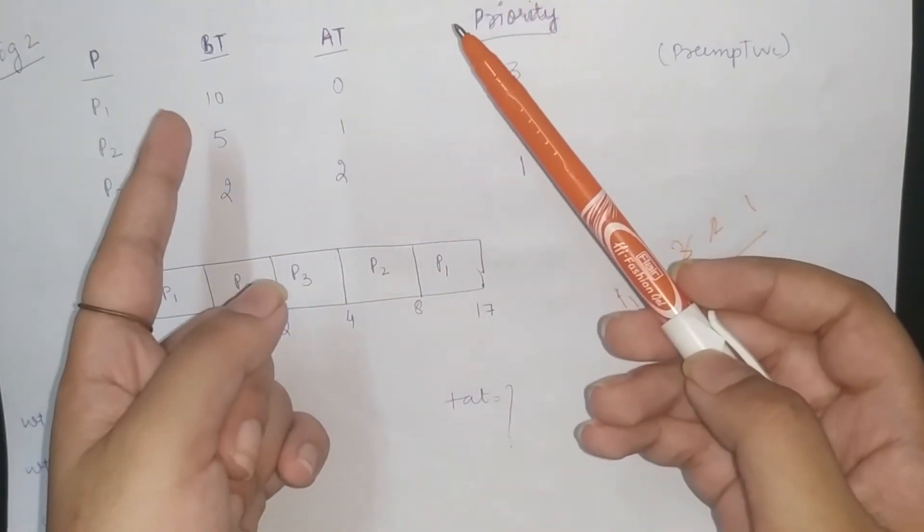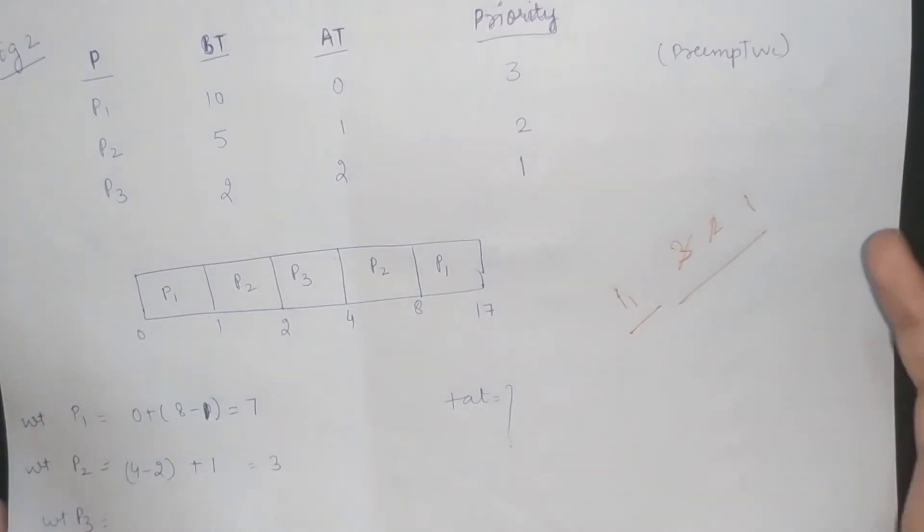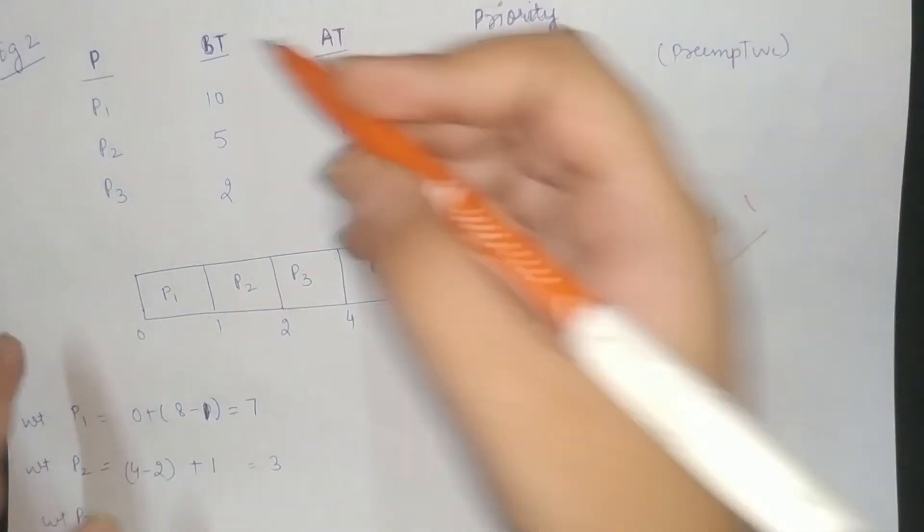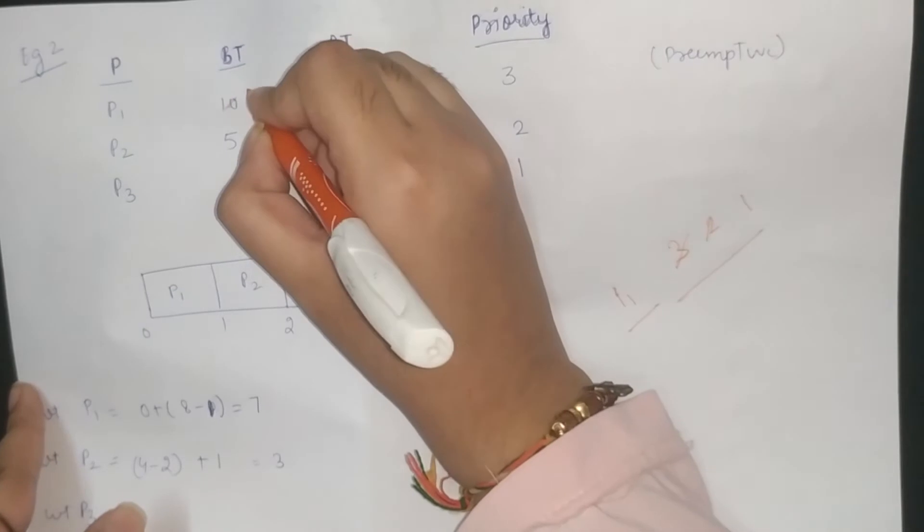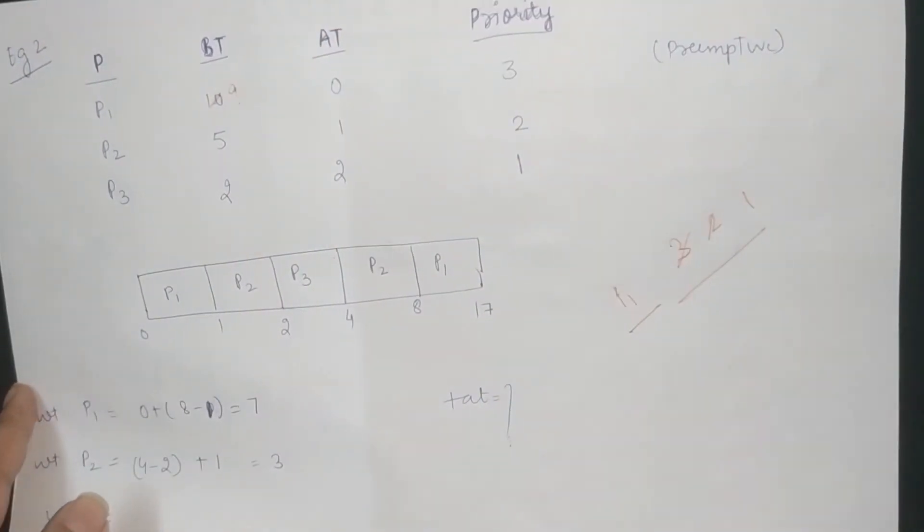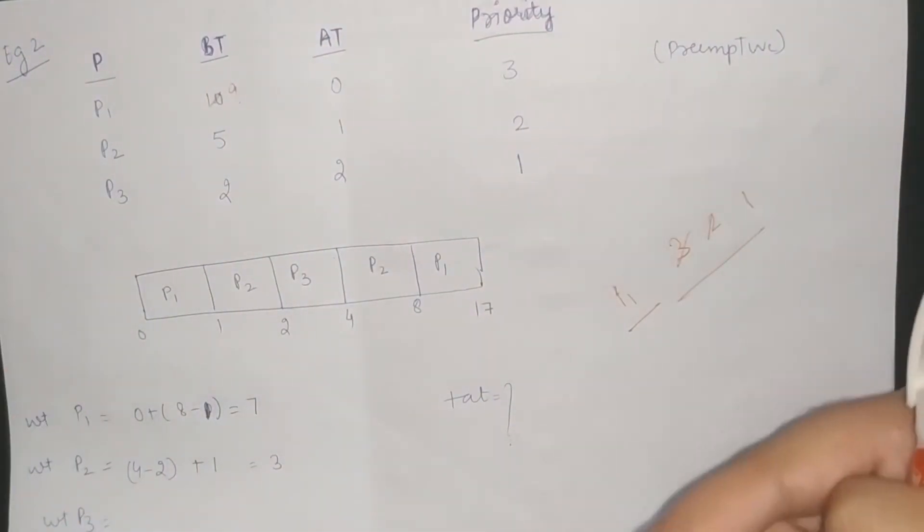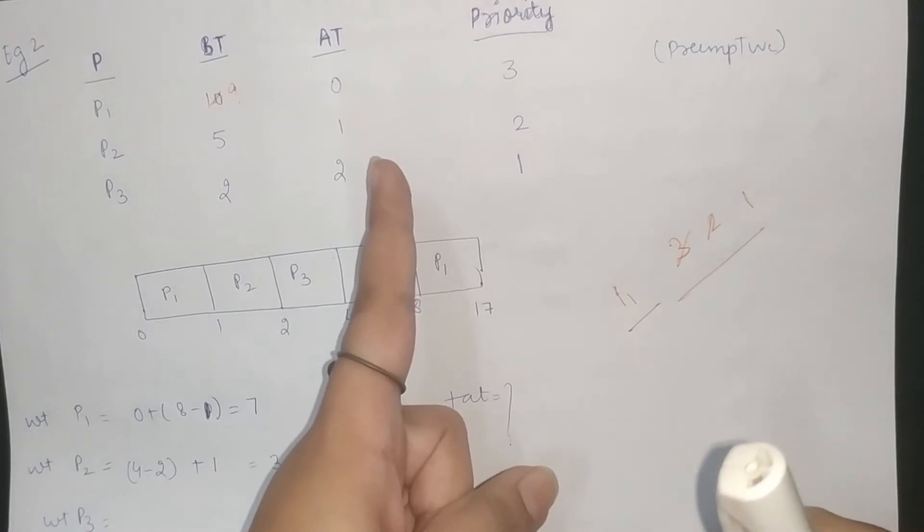Suppose it is executed for 1 second, so 9 seconds are still left. But when we execute 1 second, we have P2 in the line.